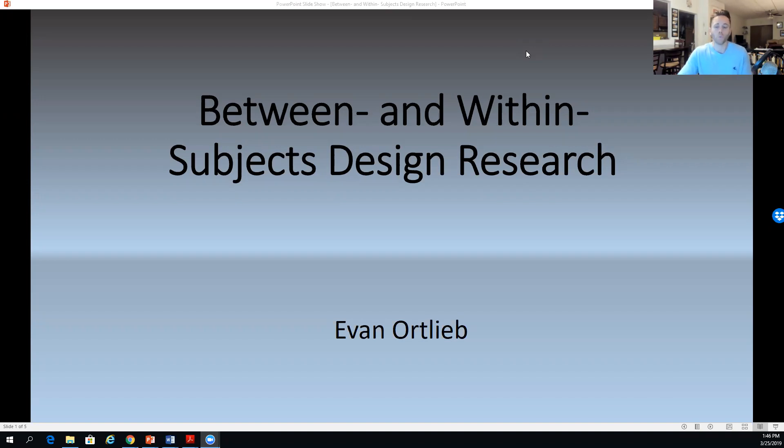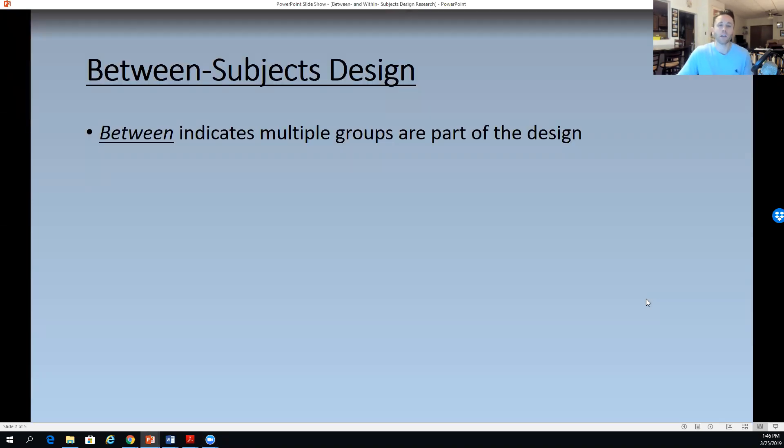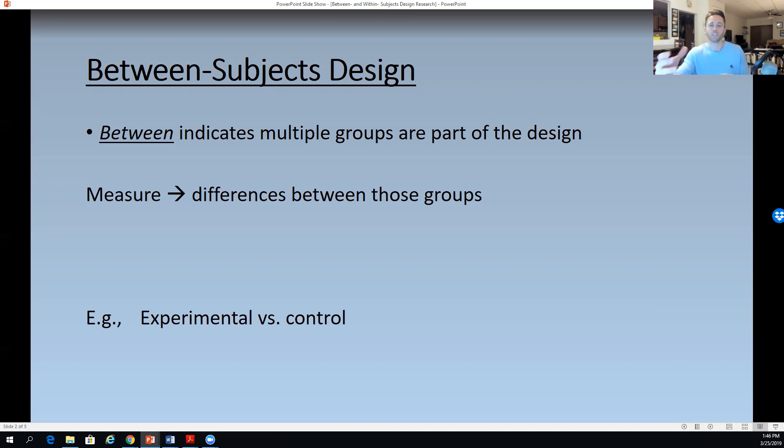We're going to start off with what does it mean to engage in between subject research design. And that really looks at the between idea, thinks about multiple groups who do not get the same treatment. We're looking at measuring the differences between those two groups. If one group, for instance, was an experimental group and one group continued to get the control treatment, this could be for medical research, educational research, marketing research or whatever else.